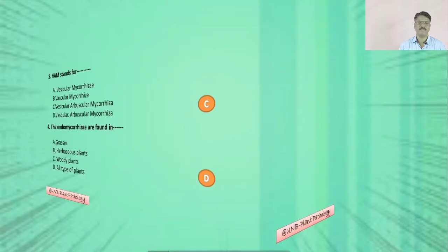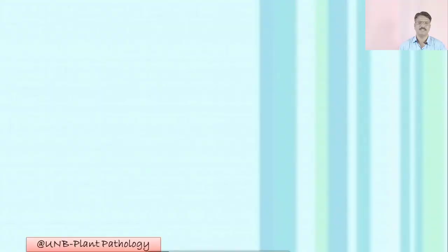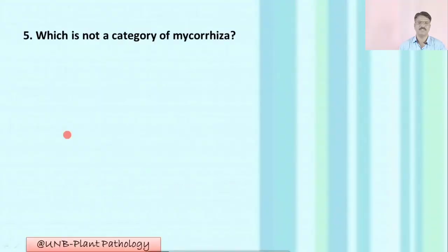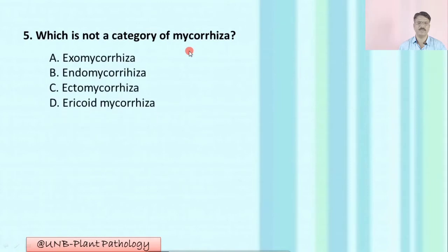Question number five: Which is not a category of mycorrhizae? A: exomycorrhizae; B: endomycorrhizae; C: ectomycorrhizae; D: required mycorrhizae. The correct option is A: exomycorrhizae.